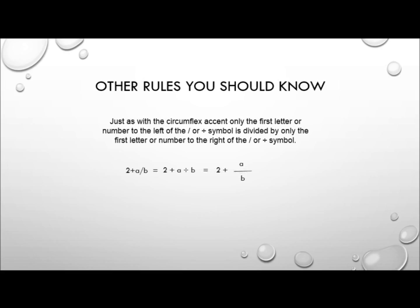Just as with the circumflex accent, only the first letter or number to the left of the slash or divide symbol is divided by only the first letter or number to the right. So 2 plus a slash b is the same as 2 plus a divided by b, which equals 2 plus a on the numerator and b on the denominator. If you wanted the 2 plus a to be on the numerator with b on the denominator, you'd just use brackets: put the 2 plus a in brackets and then the slash b.